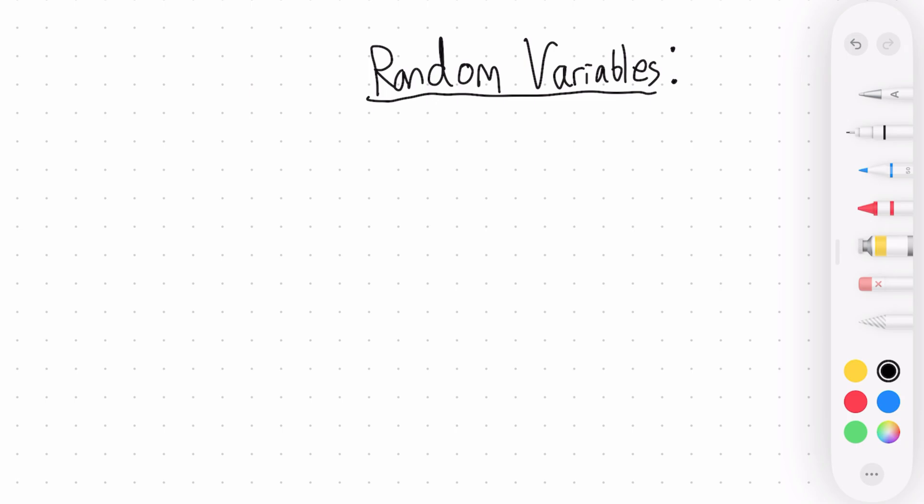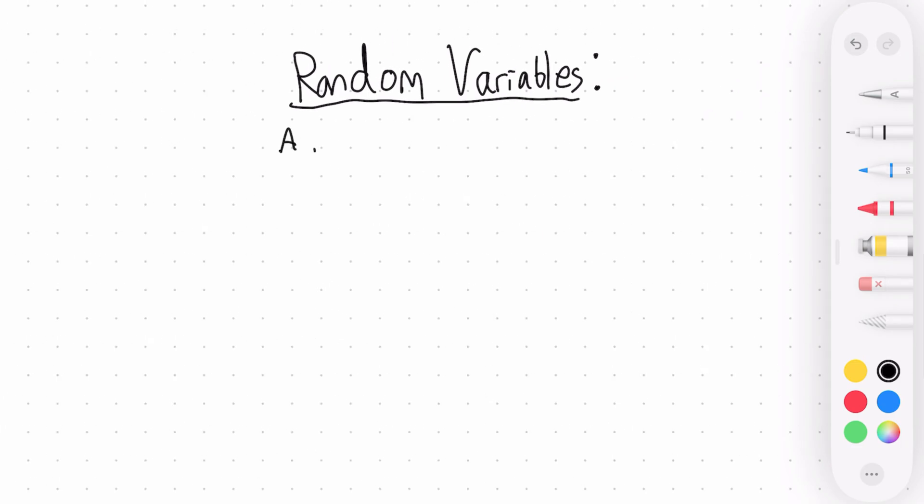Now in the history of all things that are poorly named, I think random variables is probably one of the worst because a random variable is actually not a variable at all. What a random variable is, is actually a mapping or a function.